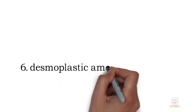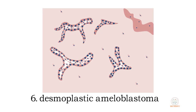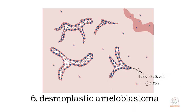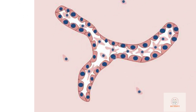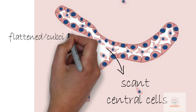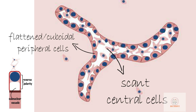The sixth type is the desmoplastic ameloblastoma. In this type, the epithelial component has a tendency to grow in thin strands and cords. These bizarre configurations are sometimes called animal-like. The central cells are often scant and the cells making up the periphery are flattened or cuboidal. Reverse polarity of nuclei and sub-nuclear vacuole formation may be difficult to identify.